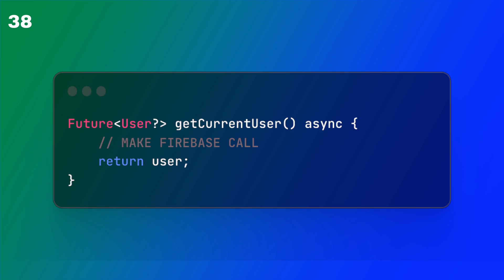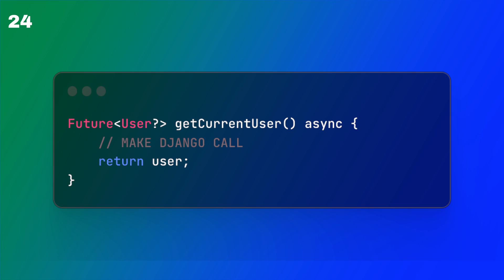For example, if I'm making a call to Firebase to get a user, I'll wrap that in a function called getUser and within that function make the call to Firebase. Then later, if I want to call a different service such as a Django backend, I can still use that getUser function but just change out the interior — instead of calling Firebase, I would call the Django backend. This lets me use getUser throughout my app without worrying about Firebase or Django in any other areas.